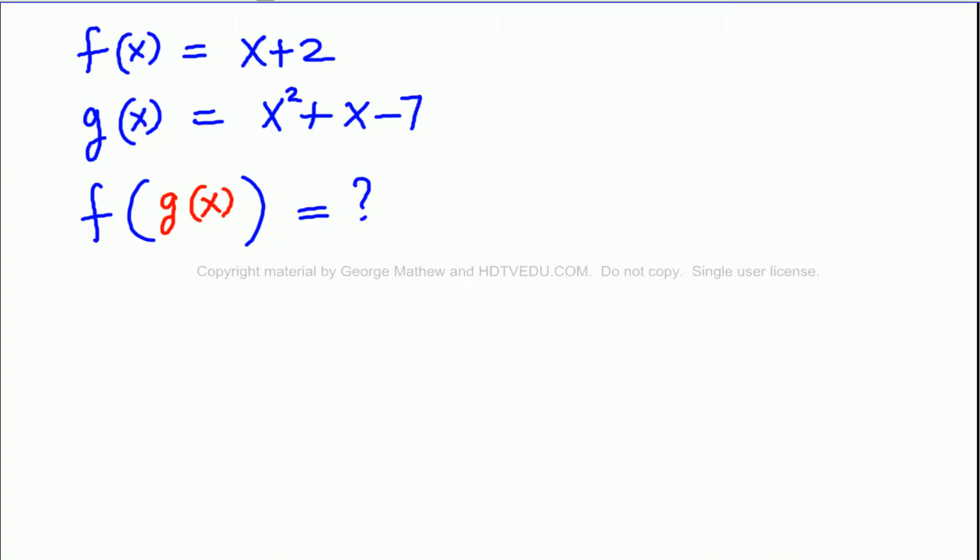So we are told that f of x equals x plus 2. We are told that g of x is x squared plus x minus 7. Find f of g of x equals x plus 2.